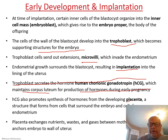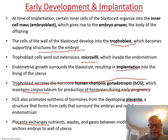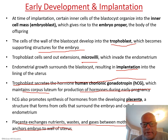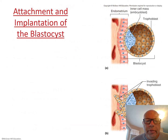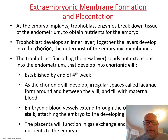After the placenta develops, it takes over hormone production and ensures the fetus gets its nutrients and waste exchange. Pregnancy tests detect HCG, which is how one can determine pregnancy.